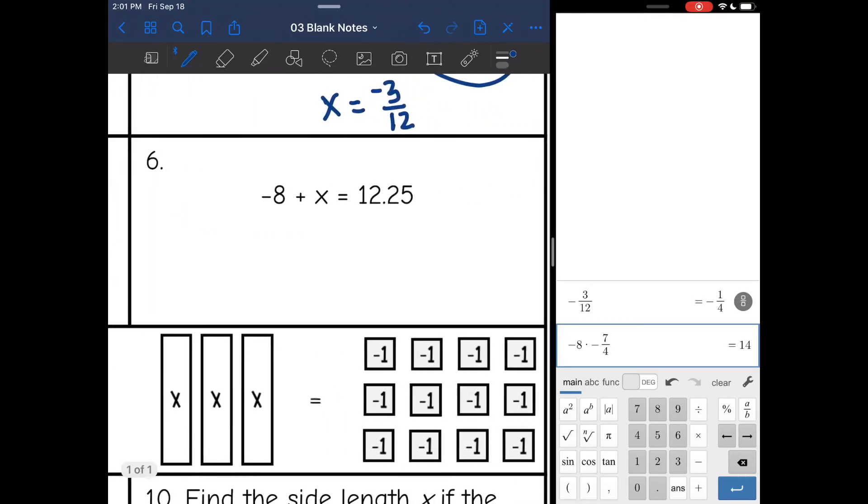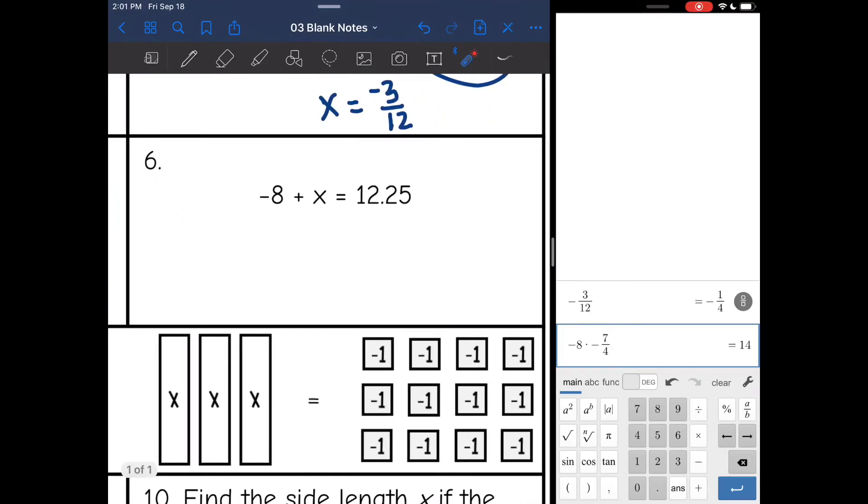Number 6, I am adding a negative 8. Main thing you need to ask yourself is how do I make 0 with the negative 8? I'm wanting the number over here to be 0 so that x is by itself. So I'm going to do the opposite of negative 8, which is add 8 to both sides, and I get x equals 20.25.